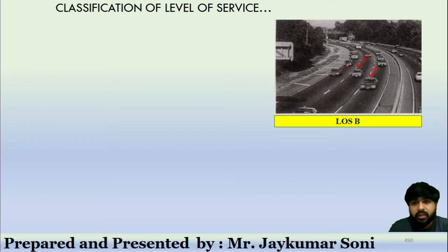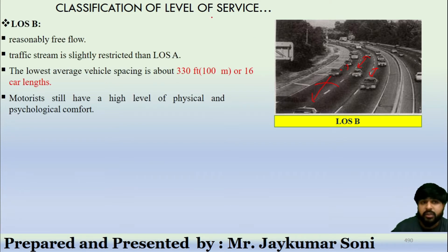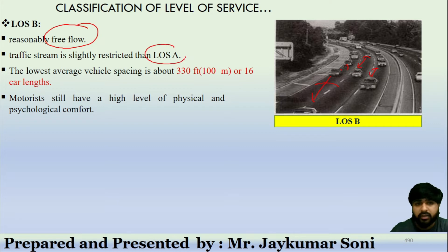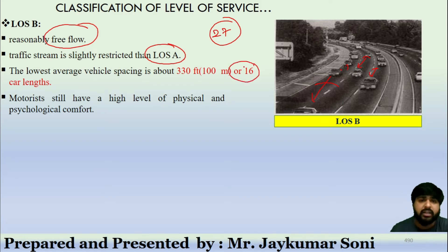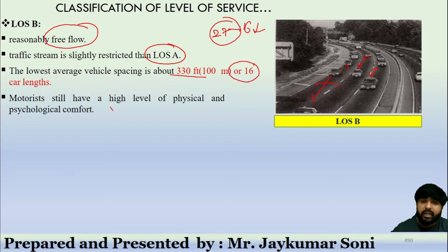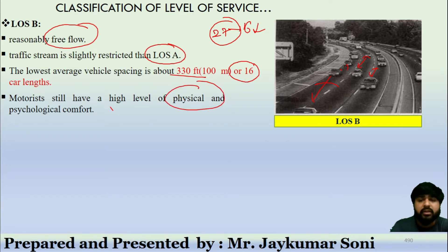Level of service B is called free flow. Compared to LOS A, the distance between cars is reduced — from 27 car lengths down to 16 car lengths. The traffic stream is slightly restricted compared to LOS A. However, motorists still have a higher level of psychological and physical comfort, making it easier for drivers to move along the road section.